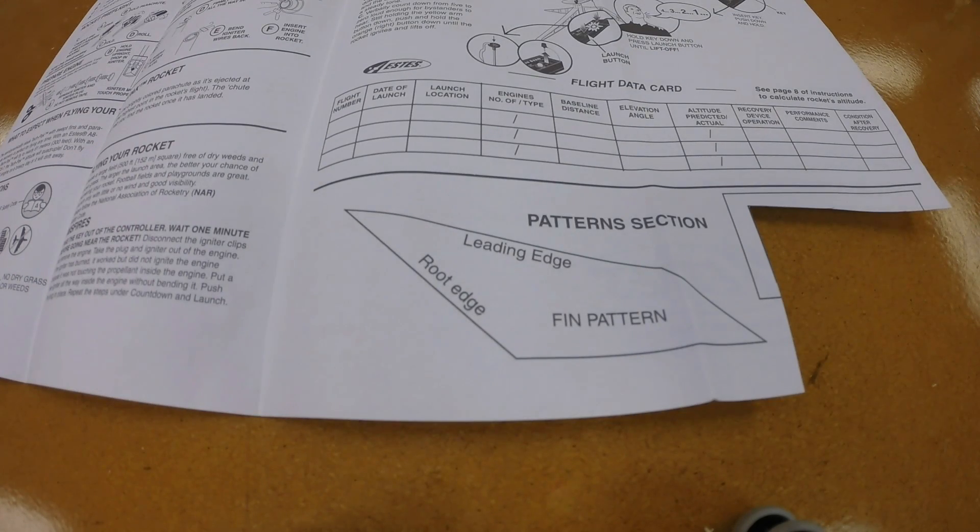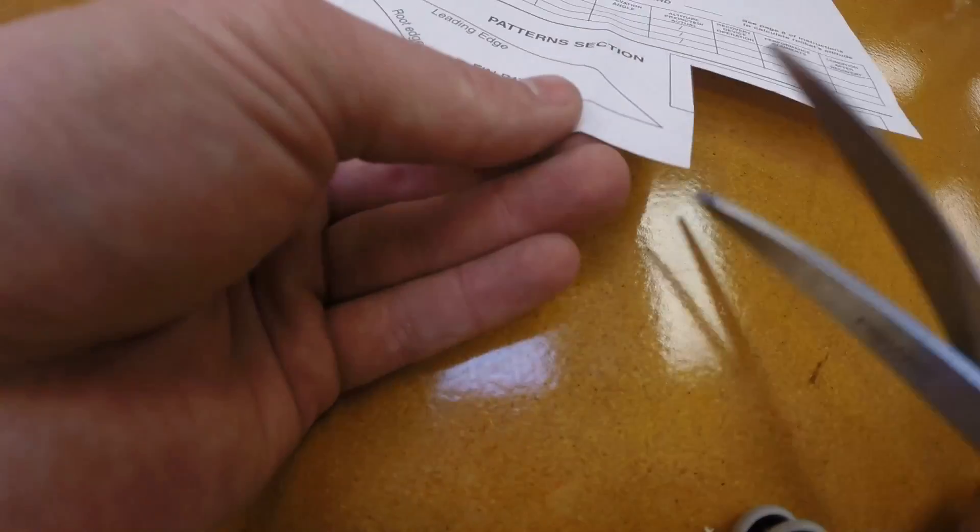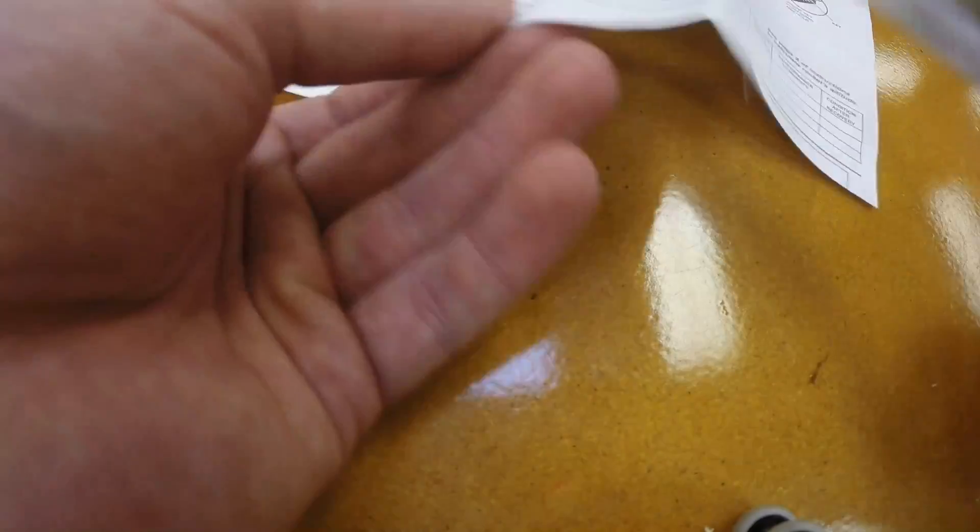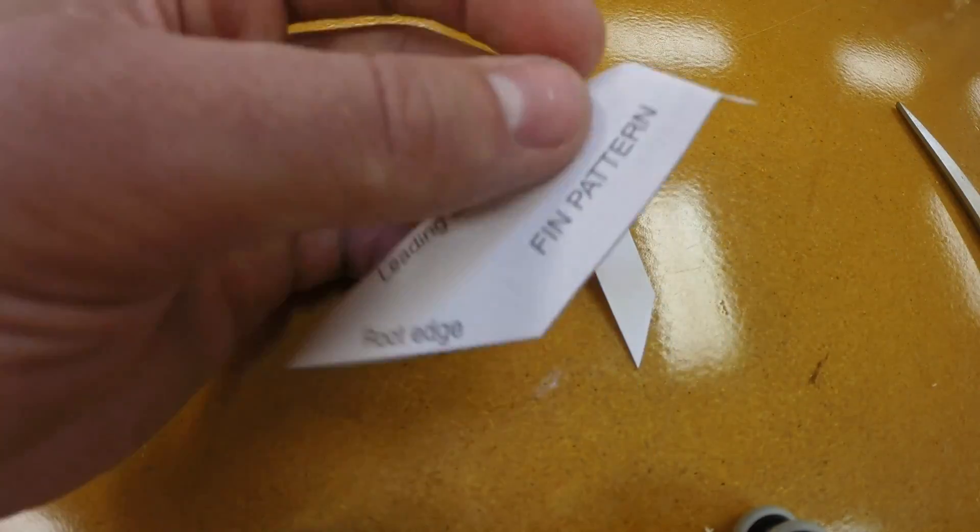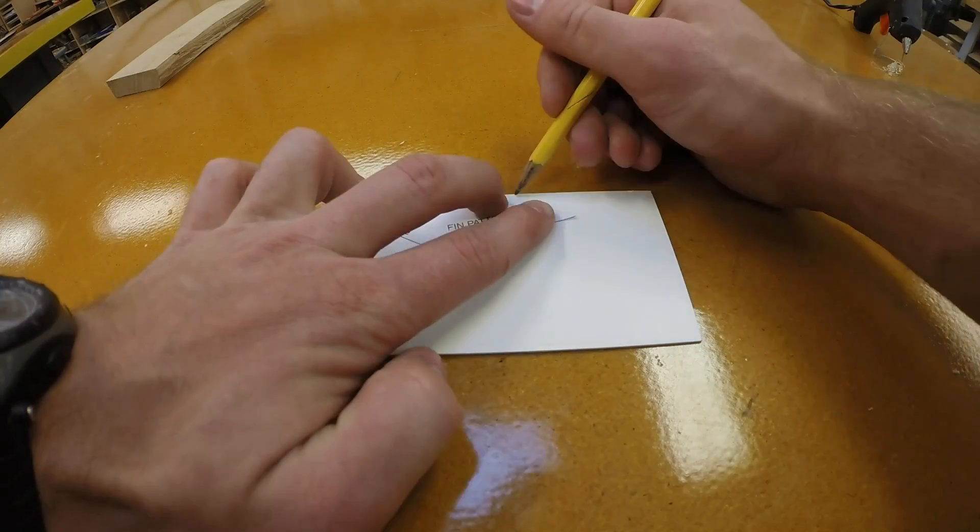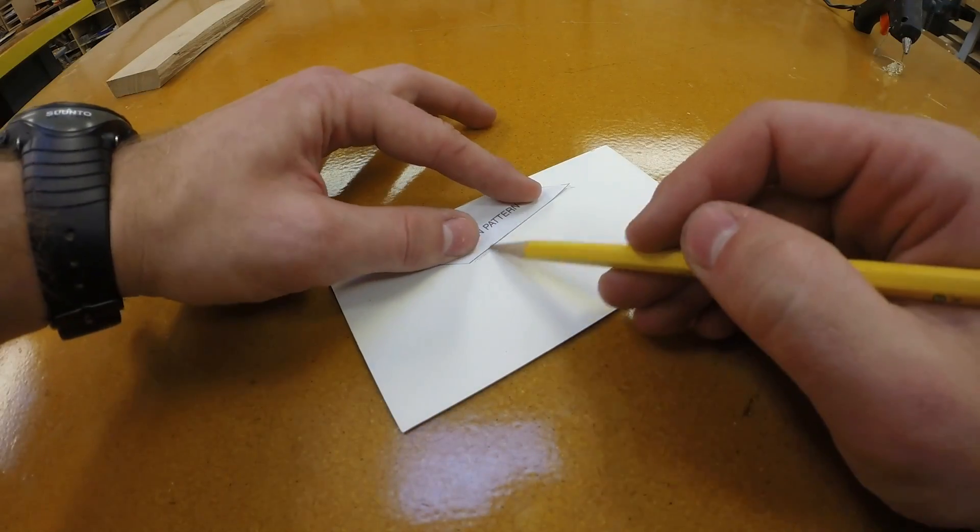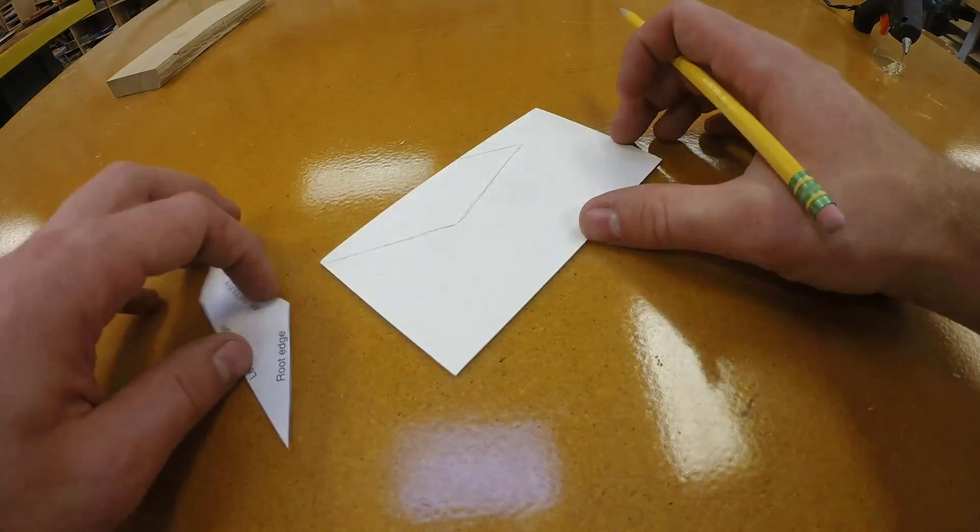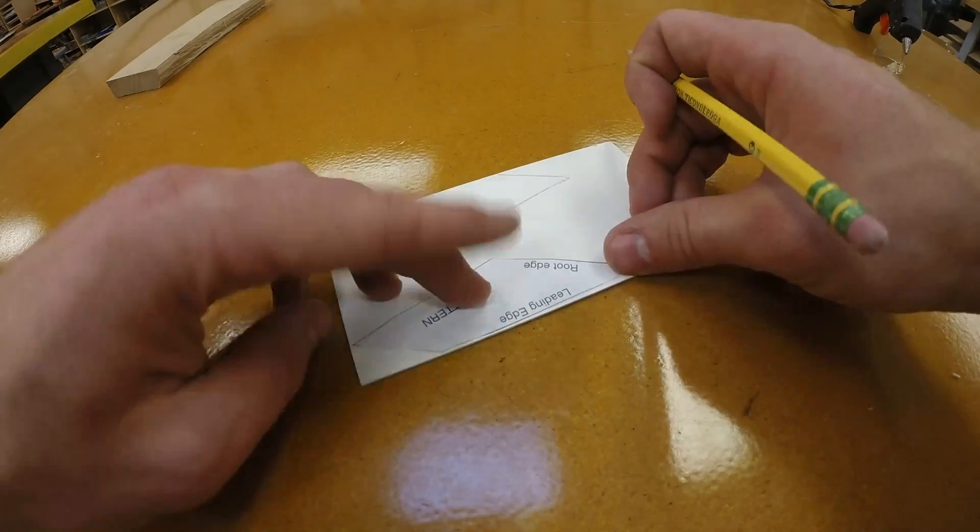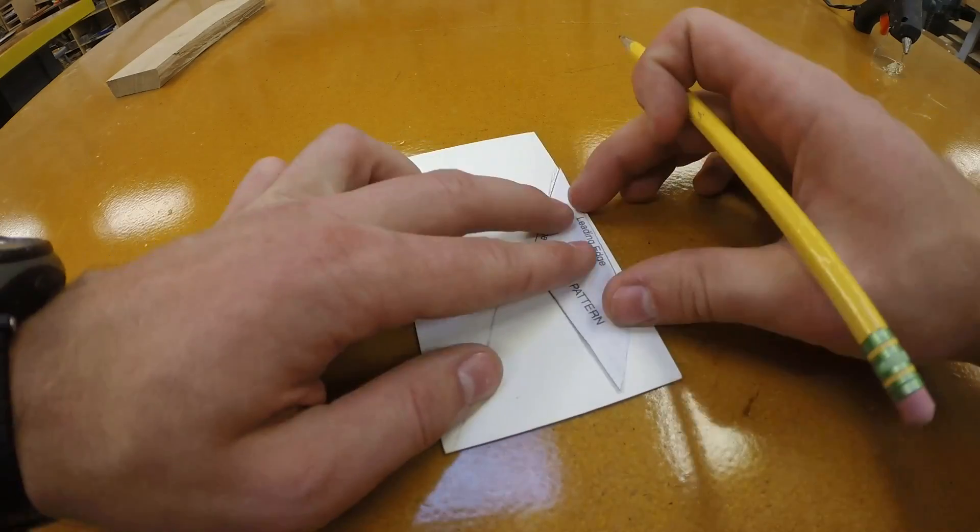Back on page 7 in the pattern section we should have an outline for one of the fins. You're going to cut this pattern out and we're going to trace it onto the fin stock. There's a diagram in your instructions that shows you exactly how to lay out these three fins on the piece of fin stock. There's really only one way to get them to all fit on there so make sure that you're putting them on there in the correct place otherwise you're not going to have enough room to fit the last one.